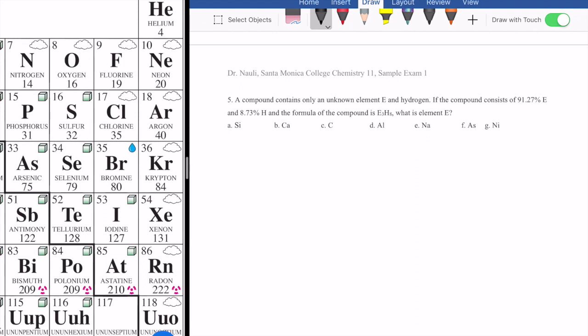So let's think about this real quickly. Typically when we want to find an empirical formula, what we do is we take the percent composition, and we convert it to mass, and then you divide the mass by the molar mass, gives you the number of moles of the element.